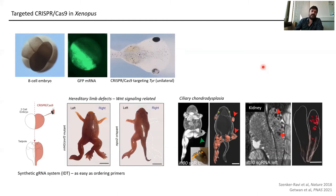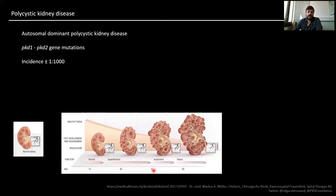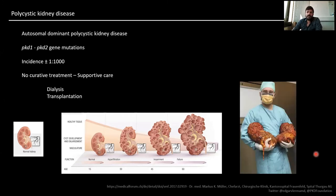This brings us to my disease of interest: autosomal dominant polycystic kidney disease. This is a consequence of either PKD1 or PKD2 mutations in patients, with an incidence of one in a thousand — making it the most common genetic disease known to man. It is characterized by an ever-increasing amount of cysts that grow ever larger as the patient ages, leading to a decline in healthy tissue and end-stage renal failure. There is no curative treatment — only supportive care: dialysis or transplantation. Dr. Muller from Hospital Turgo has successfully removed over 22 kilograms of polycystic kidney from one patient.